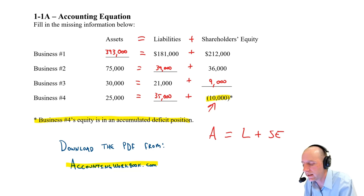$35,000 plus a negative $10,000 is $25,000. Assets still do equal Liabilities plus Shareholders' Equity. We call that accumulated deficit if we have negative retained earnings, as this company certainly would.